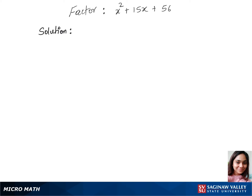Let's factorize this trinomial. We'll first find the factors for 56. The factors of 56 are: 14 times 4, 28 times 2, and 7 times 8.